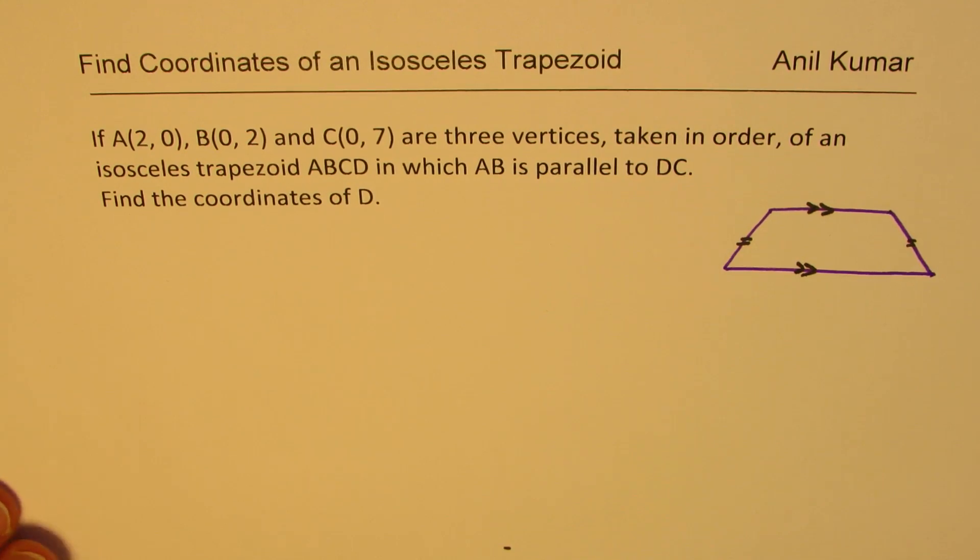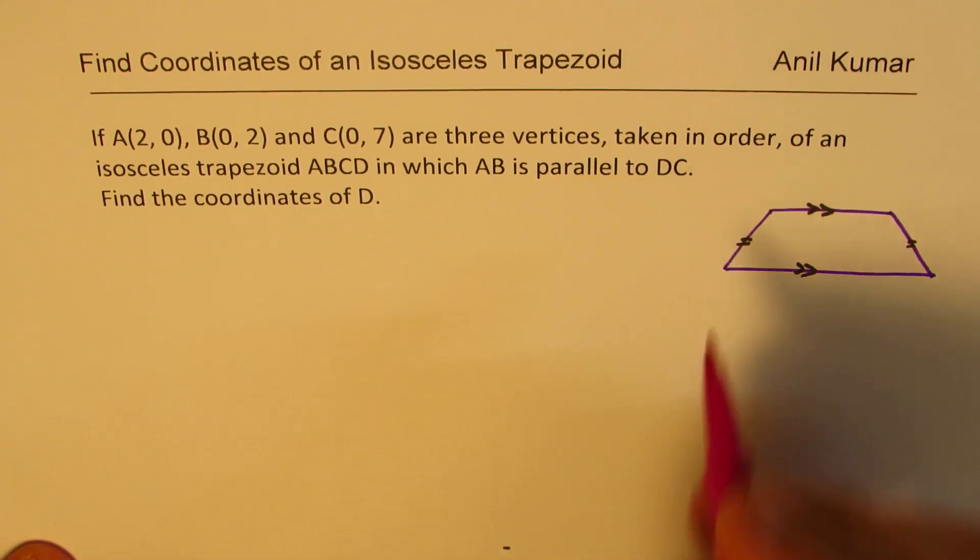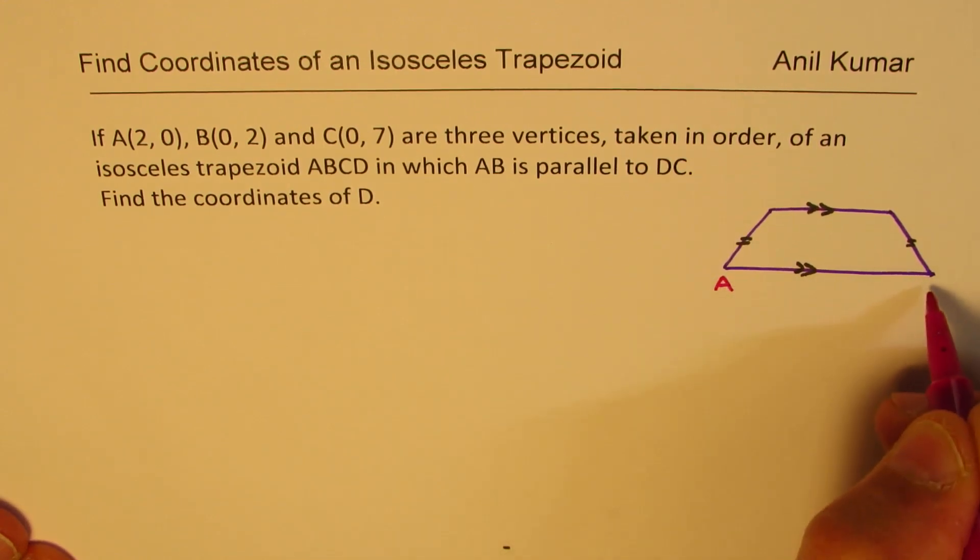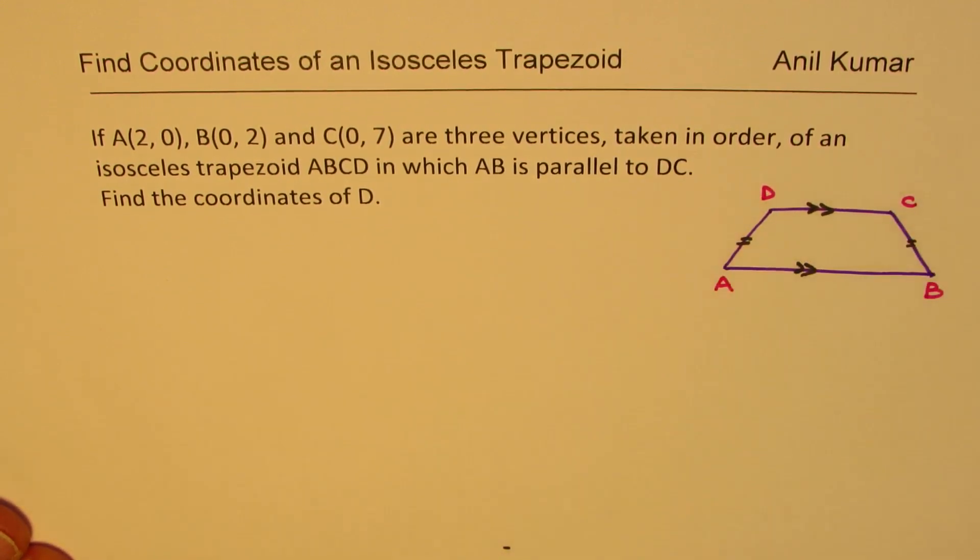We are given that AB is parallel to DC. So we'll keep this as AB and cyclic means C and D should be here. So that is cyclic. Now, so we are given these things. We need to find coordinates of point D.